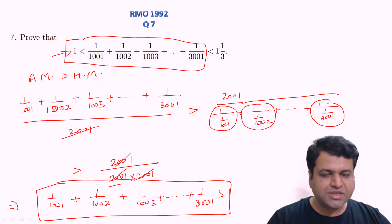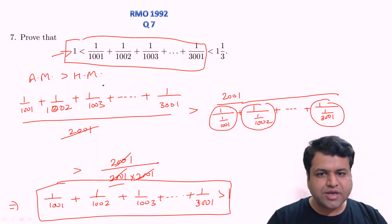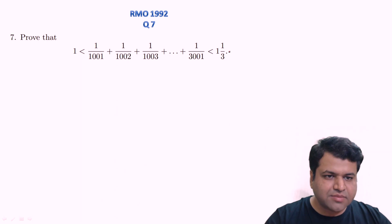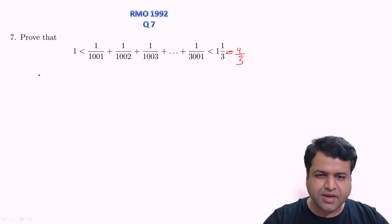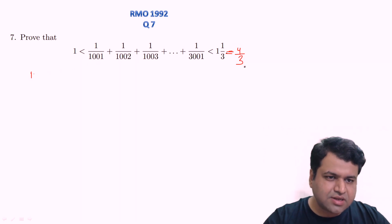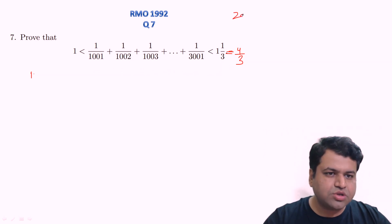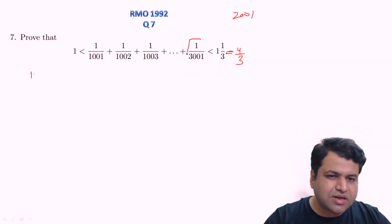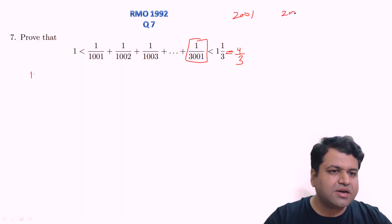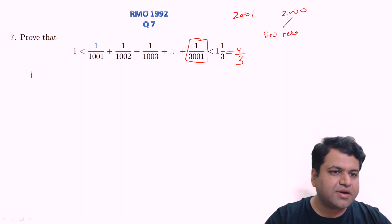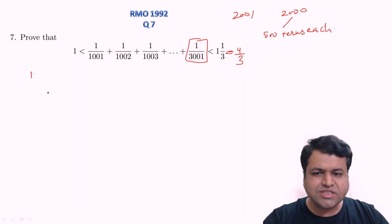Now let's proceed to the second part, which is a little tricky. We need to prove that the sum is less than 4/3. The trick is to keep aside the last term 1/3001, and break the remaining 2000 terms into four parts of 500 terms each.